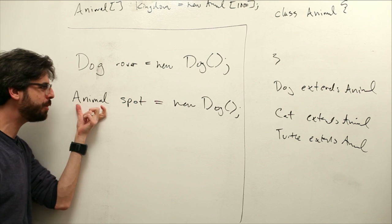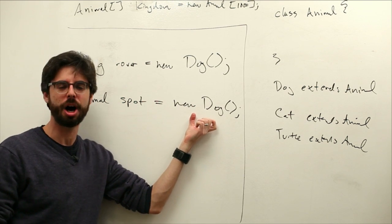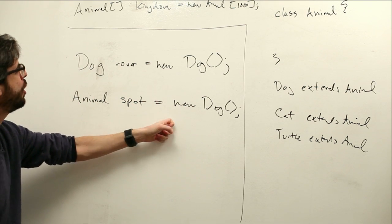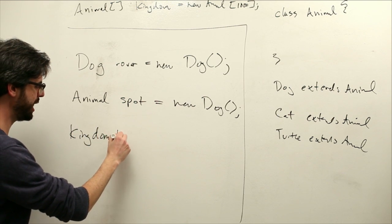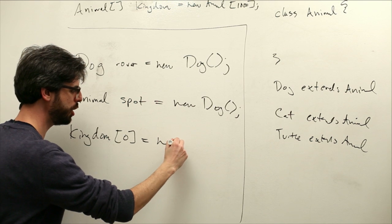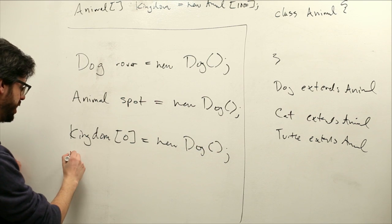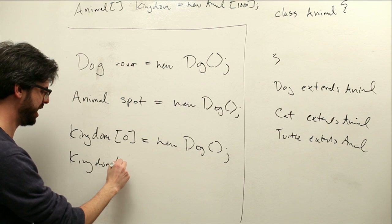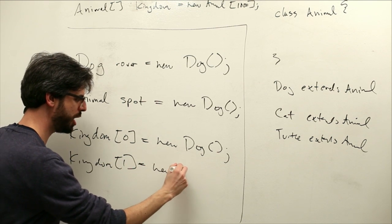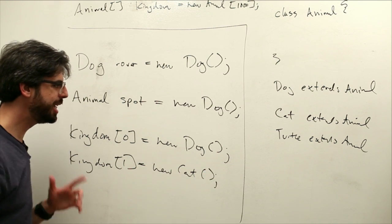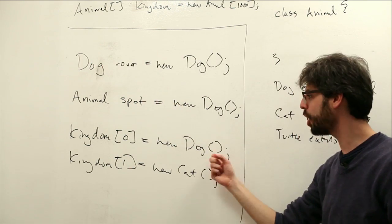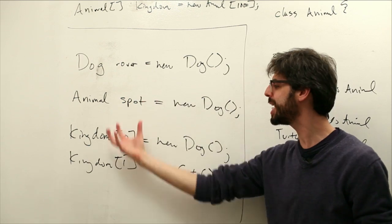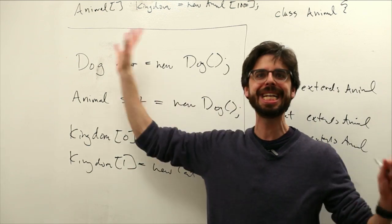We can make an animal object which is specifically a dog. This is what allows us to put kingdom index 0 could be a new dog, kingdom index 1 could be a new cat. This is the magic of polymorphism. Kingdom is just a bunch of animals. A dog is an animal, a cat is an animal. We can collect all these different kinds of classes into the same array.